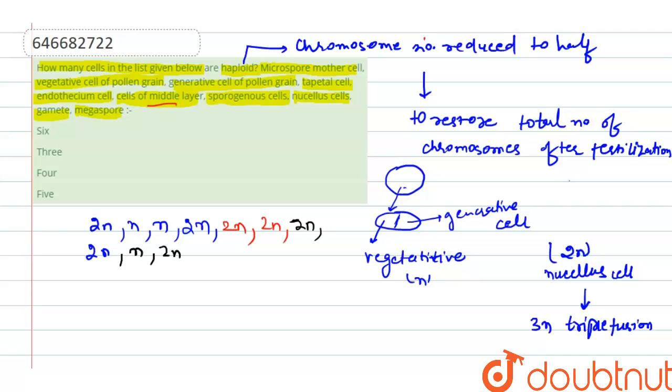Out of the following, we will count only three. One, two, and three are haploid; rest all are diploid. So our answer to this question will be three. Three will be the correct answer. Thank you.